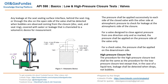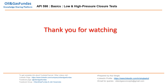This is how low and high pressure closer tests are performed. All terms, conditions, and requirements are given in API 598 — for which valve to perform the test, at what pressure, and for what duration, everything is mentioned in tables one, two, three, and four. Thank you for watching — see you in the next part.